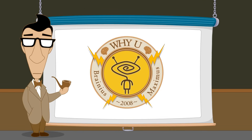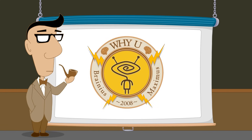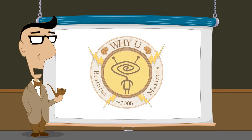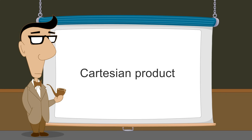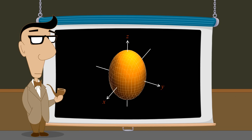Hello. I'm Professor Von Schmohawk and welcome to Why U. In this lecture, we will introduce an important set operation called the Cartesian product. This operation creates the framework on which the Cartesian coordinate system is based, allowing us to visualize mathematical relationships in two or more dimensions.